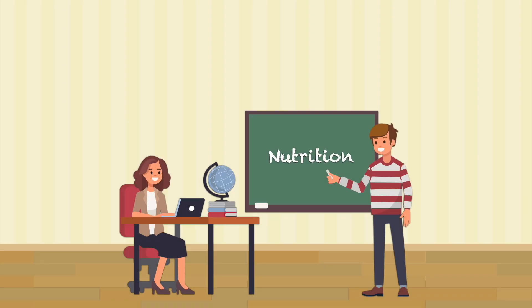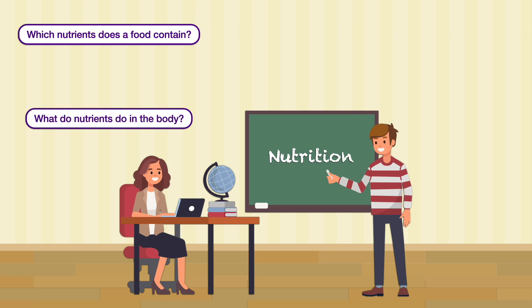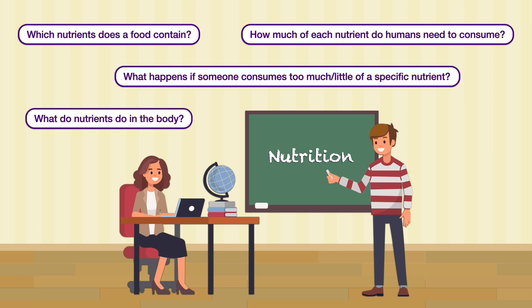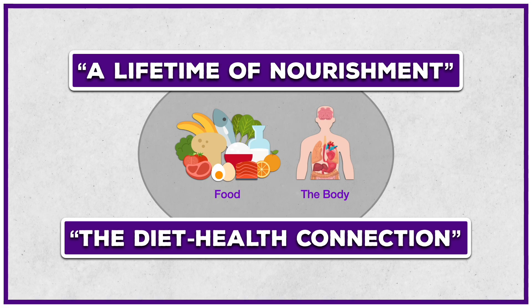Nutrition is the science of how food nourishes the body, and within that science of nutrition, there are endless questions to explore. Some common ones include: Which nutrients does a food contain? What do nutrients do in the body? How much of each nutrient do humans need to consume? And what happens if someone consumes too much or too little of a specific nutrient? Sizer and Whitney tell us to think of the relationship between food and the body as a lifetime of nourishment, while also considering the diet-health connection. These are language created by the authors to represent universal concepts in nutrition and health.